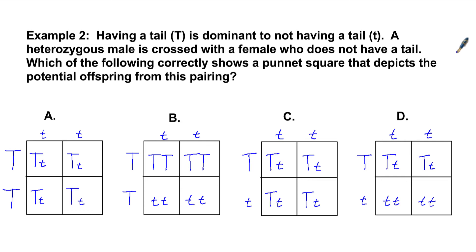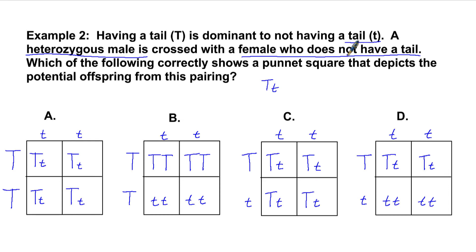Example two: Having a big T is dominant to not having a tail, which is little t. A heterozygous male is crossed with a female who does not have a tail. Which of the following correctly shows a Punnett square depicting the potential offspring? Before looking at the answer choices, write out the cross: the heterozygous male is big T, little t, and the female without a tail is recessive — little t, little t.